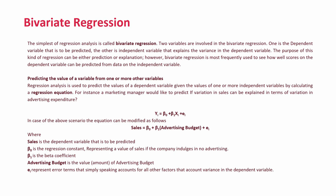The first or most basic type of regression is bivariate regression. This is the simplest regression analysis, in which two variables are involved: one is your dependent variable while the other is your independent variable. The purpose of this kind of regression can be either prediction or explanation. However, bivariate regression is most frequently used to see how well scores on the dependent variable can be predicted from data on the independent variable, and regression analysis is used to predict the values of a dependent variable given the values of one or more independent variables by calculating a regression equation.